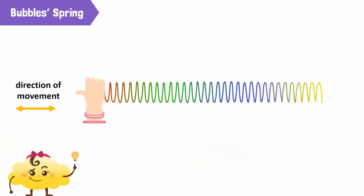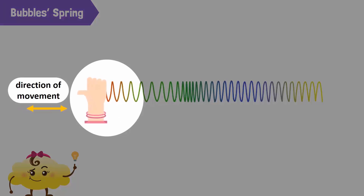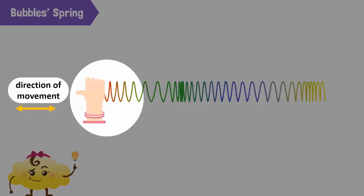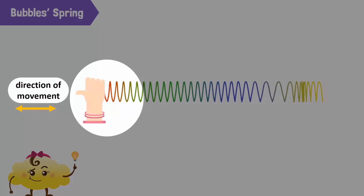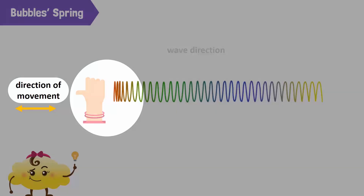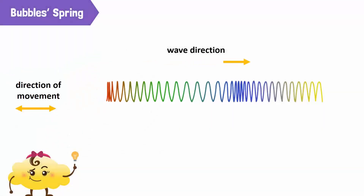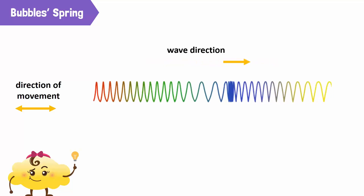Now, let's look at Bubble's spring. Notice the hand movement. Is it moving up and down? No, it's moving back and forth. Now, look at the whole spring and notice the direction of the wave. It is also moving back and forth.